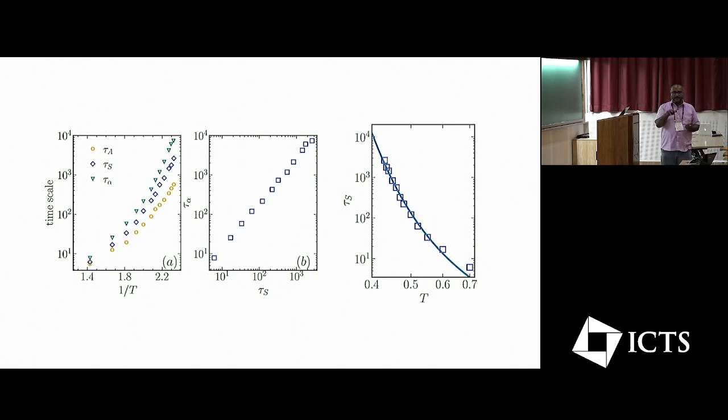So the ingredients for the CTRW model are the distribution of the region and the density, and you have different associated waiting time scales in the mobile and the immobile regions, where we consider that the caging happens, and that region becomes immobile.